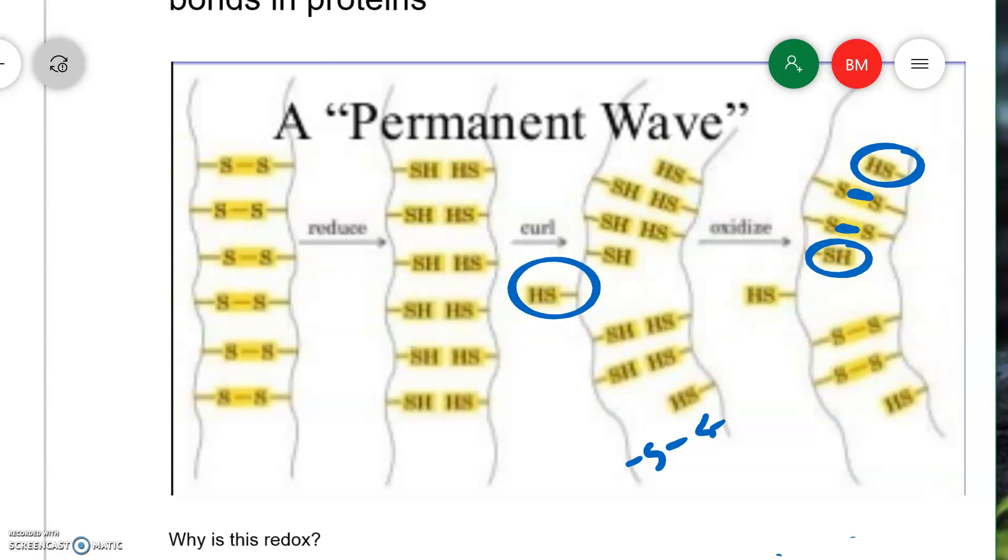And this is one of the reasons why perming or relaxing your hair weakens it. You have extra sulfurs now that aren't connected to their mate on the other protein chain. So you've reduced the number of strong bonds that are holding the hair together.